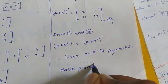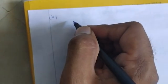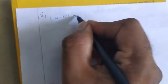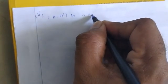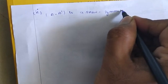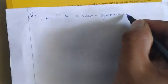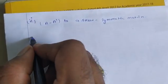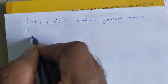Hence A plus A dash is symmetric. Next subdivision, second one: A minus A dash — prove it is skew symmetric.